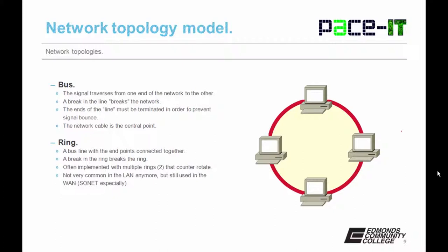Related to the bus is the ring — it's a bus line with the endpoints connected together. A break in the ring breaks the ring. In a ring topology, it's common to use two rings that counter-rotate, which safeguards against a break in one ring bringing down the whole network. Ring topologies are not very common in the LAN anymore, but they're still used in the wide area network, especially when SONET or SDH is used.